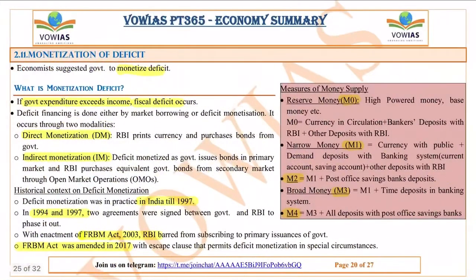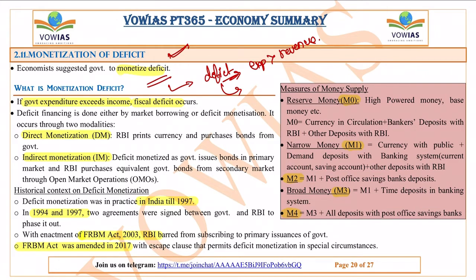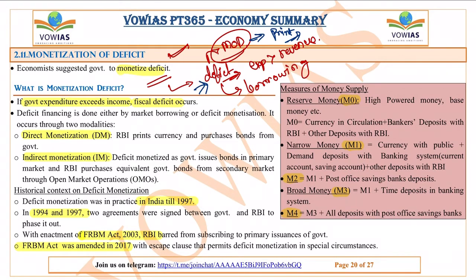The next topic is monetization of deficit. Deficit means the government's expenditure is greater than its revenue. To cover this deficit, the government does borrowings. Another instrument is deficit monetization — where the RBI, which has the power to print currency, prints money and gives it directly to the government to bridge the deficit. In simple words, RBI printing money and giving it to the government is called monetization of deficit.